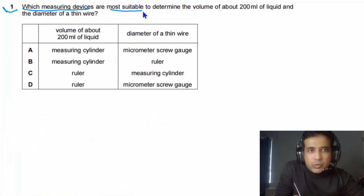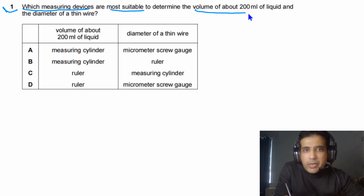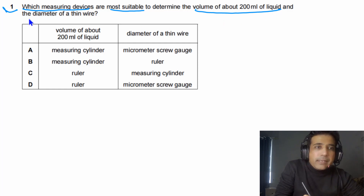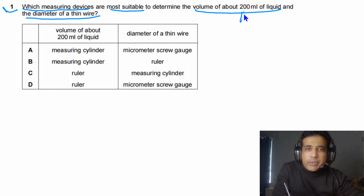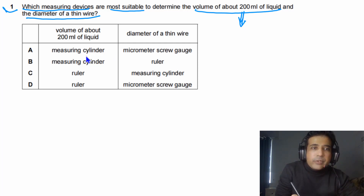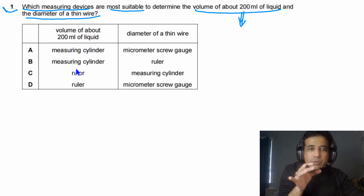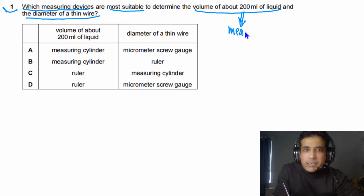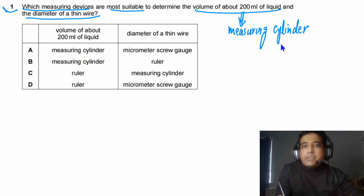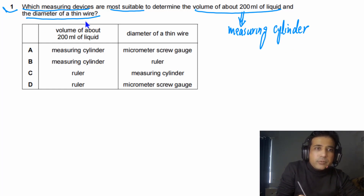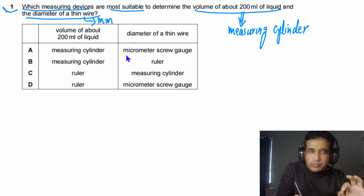For Question 1, we need to find the most suitable measuring devices to determine the volume of about 200 ml of liquid and the diameter of a thin wire. To measure volume of a liquid, we can use a measuring cylinder or a ruler. You cannot determine liquid volume using a ruler, so the best option is a measuring cylinder.